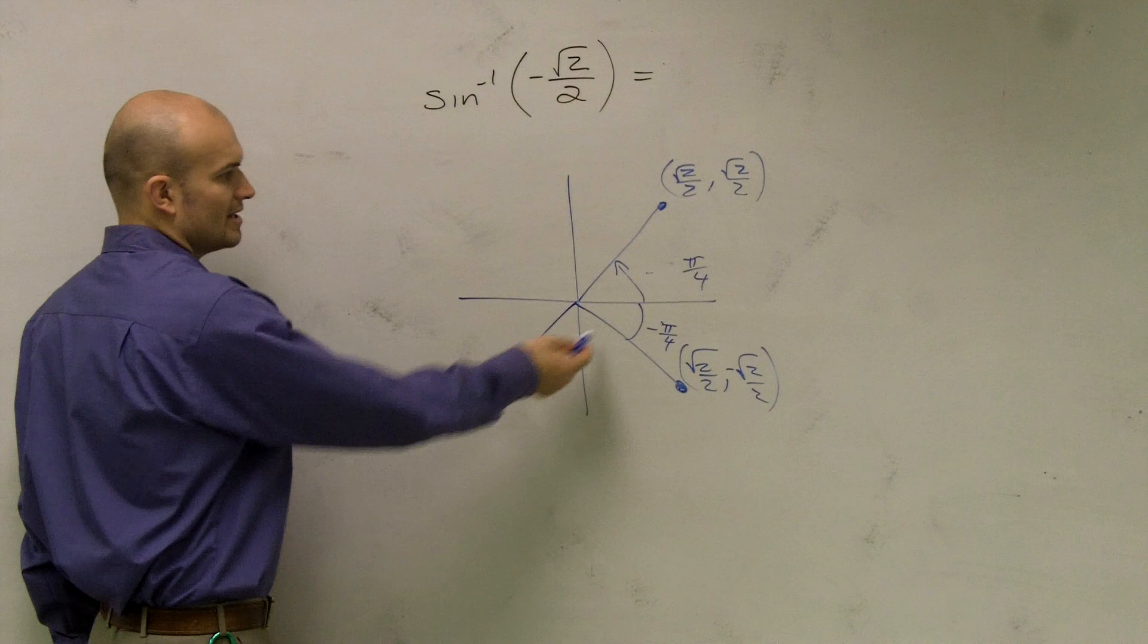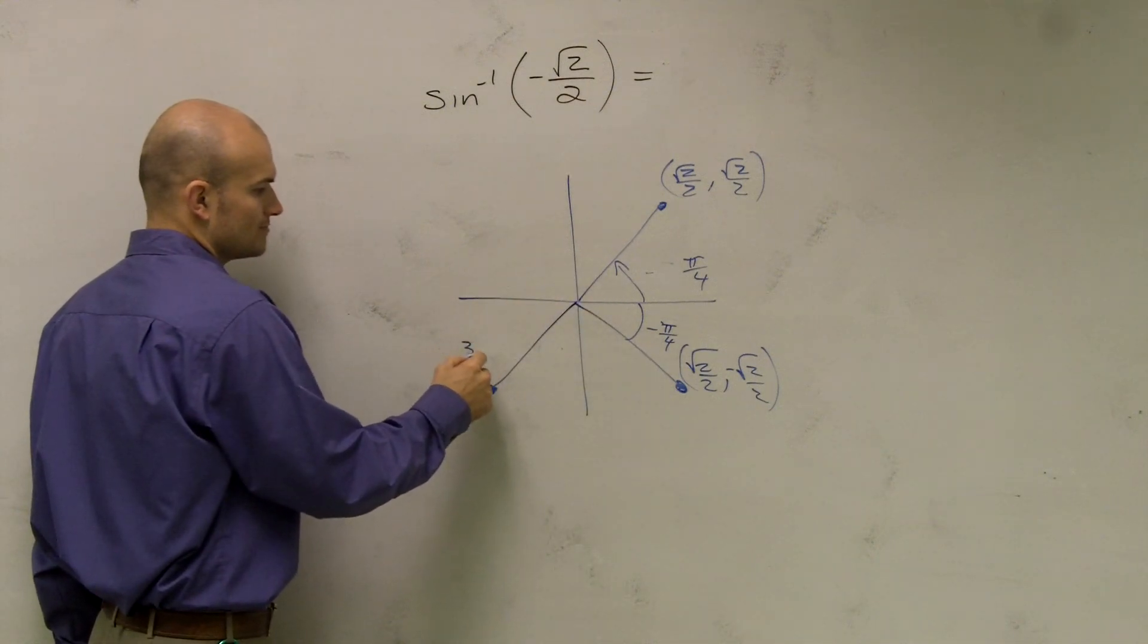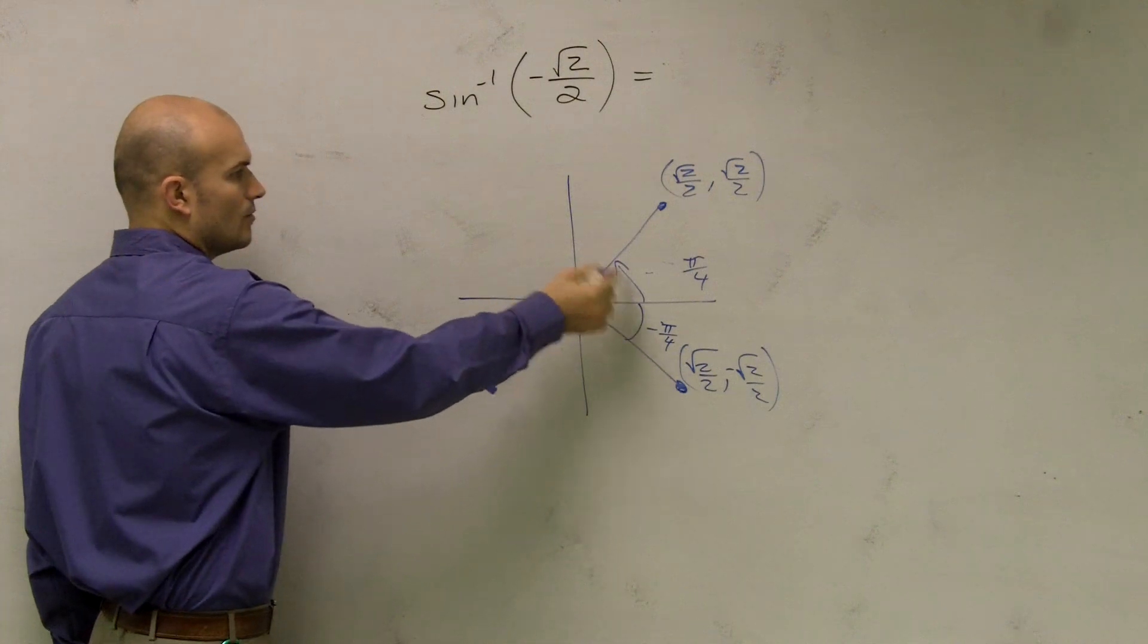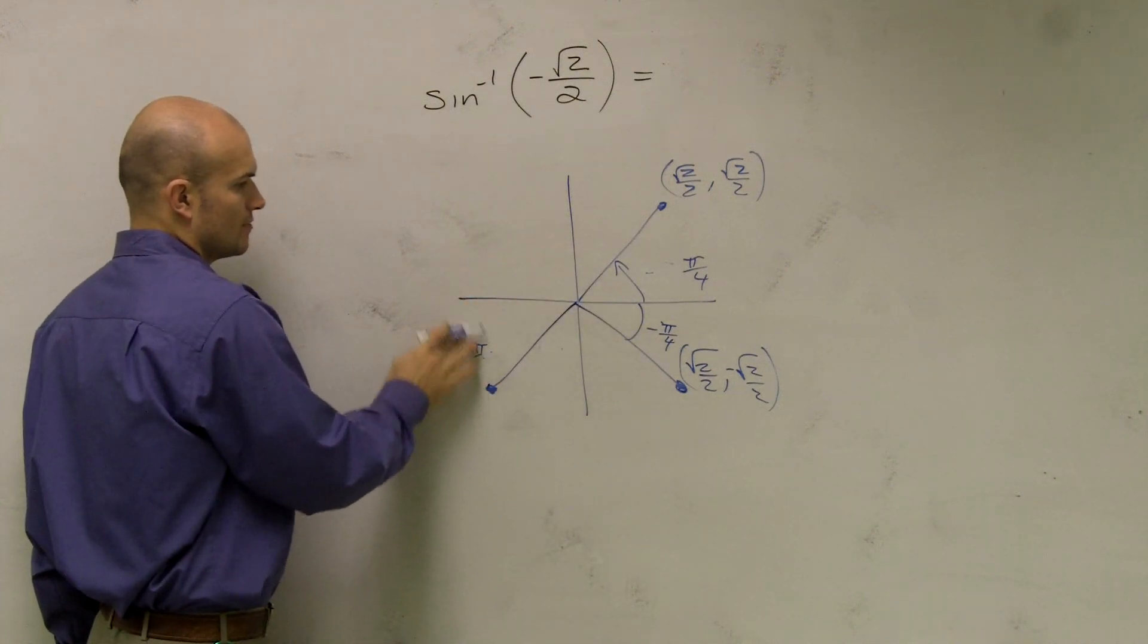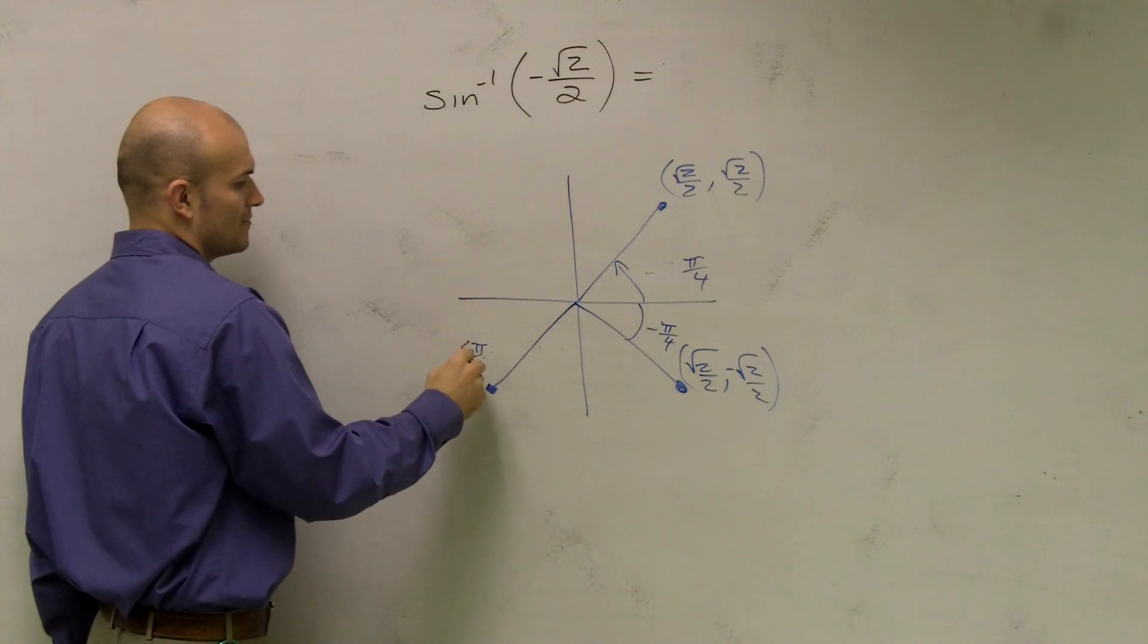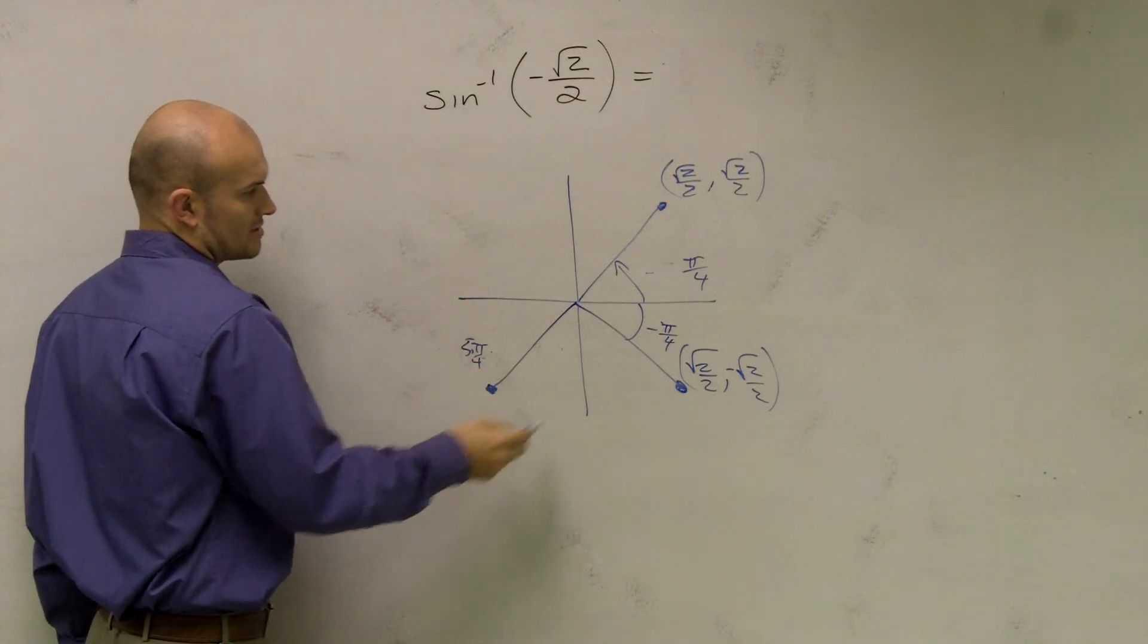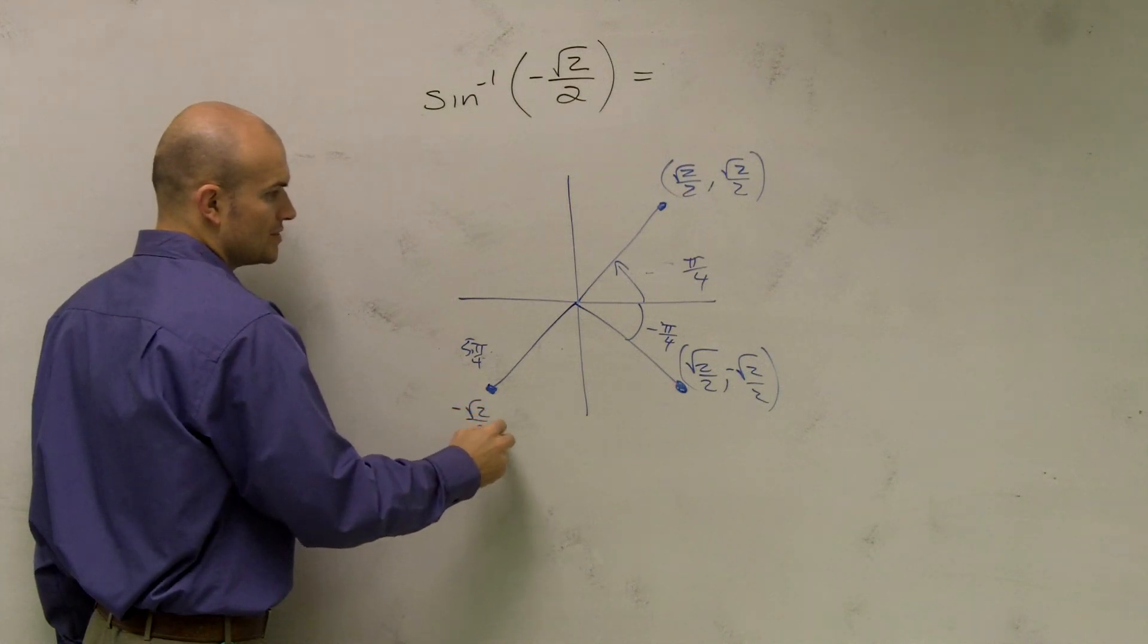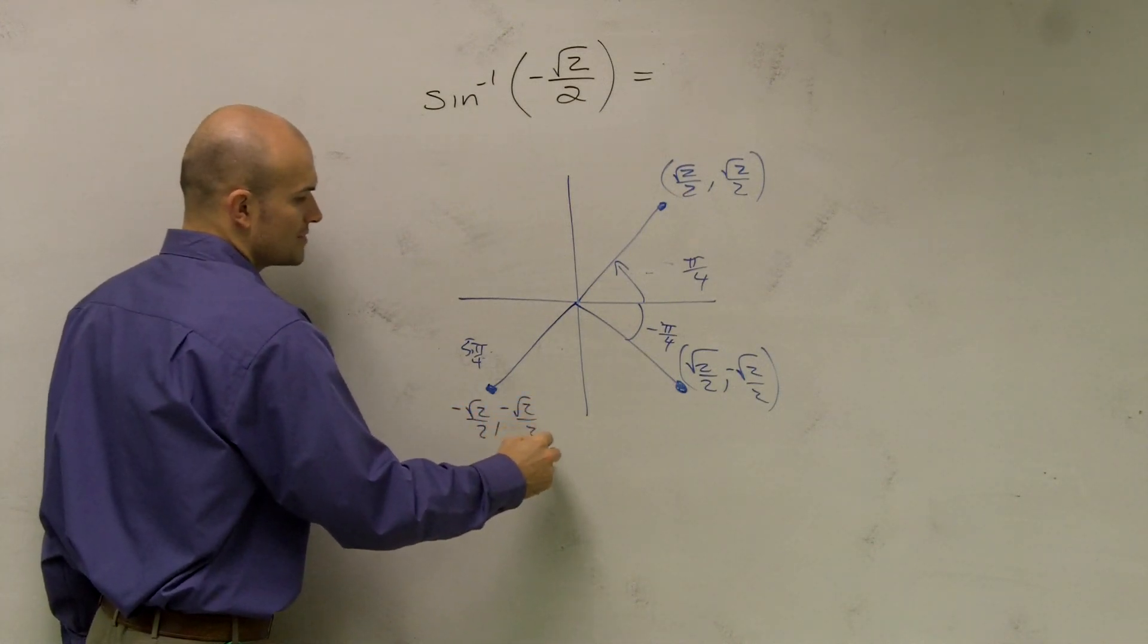And you could say this one would be a positive 3π/2... or 1π, 2π, 3π... 1π, 2π, 3π, 4π, 5π. And that one's going to be (-√2/2, -√2/2).